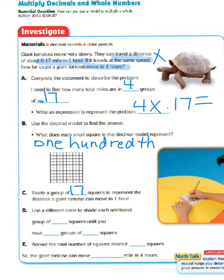And see what it says to do next. And it says to use a different color to shade each additional group of 17 squares until you have 4 groups of 17 squares. So, let's go back over and finish up with our other 3 groups.